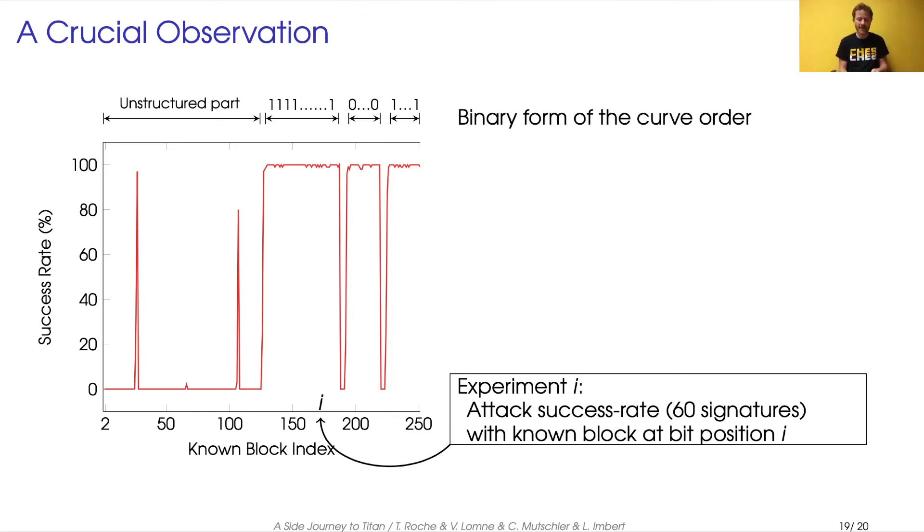And so the success rate changes actually follow exactly sequence of one and zeros. When the bit position of the known block matches a position where there is five consecutive ones or five consecutive zeros in the curve order, then the success rate is high.